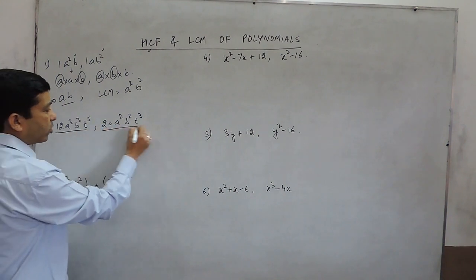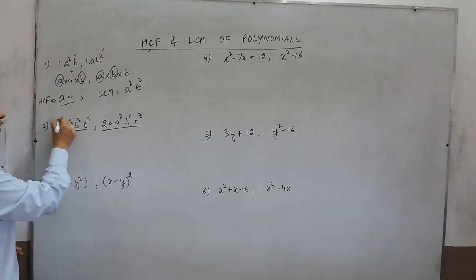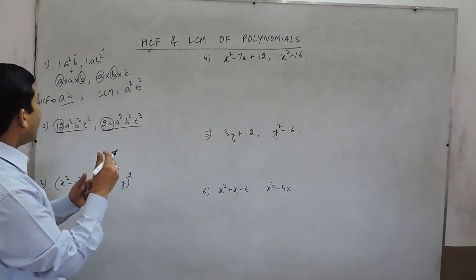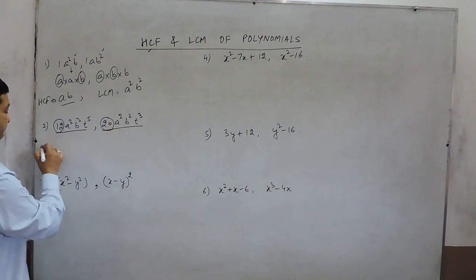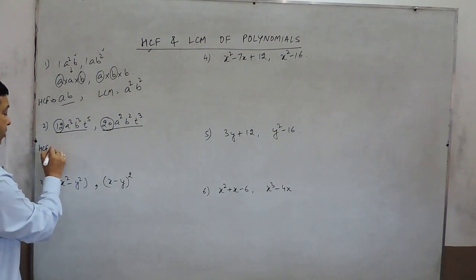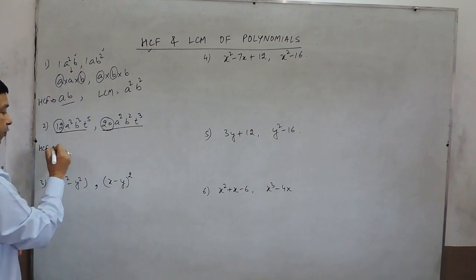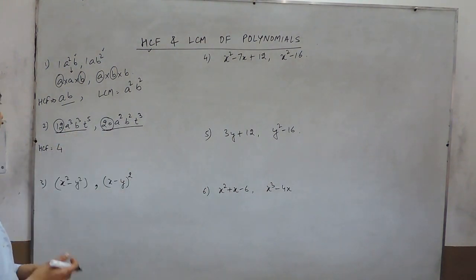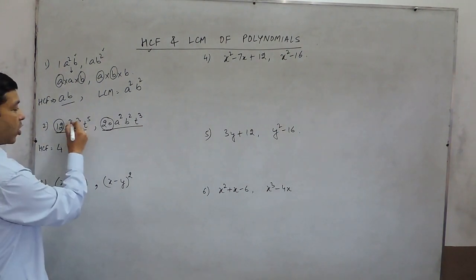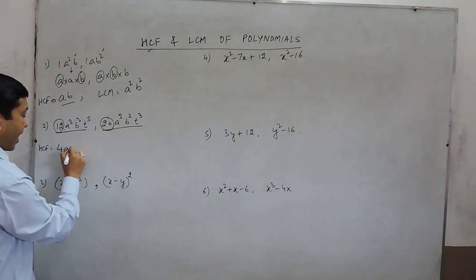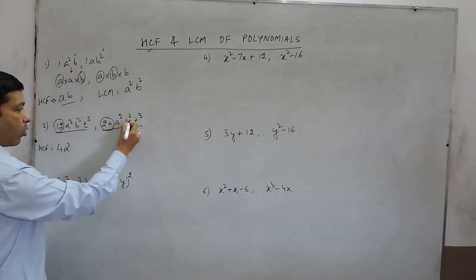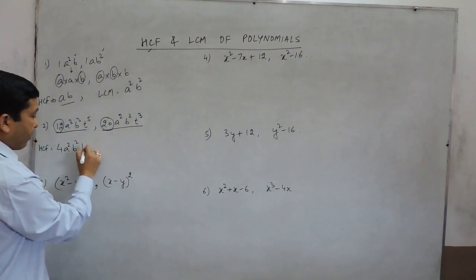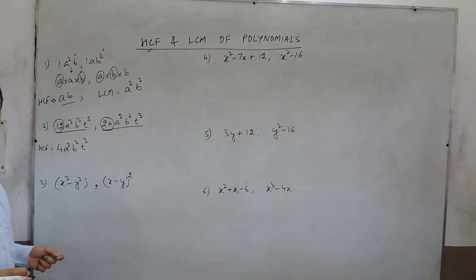Now looking at two more terms, we have to find what is common in these two factors. When we talk about the highest common factor, 4 is common in both terms. Then we look at the variable parts and find the least power. Here a² is common in both, and the least power of b is 2, which is common in both. The power of p is 3, which is also common in both.